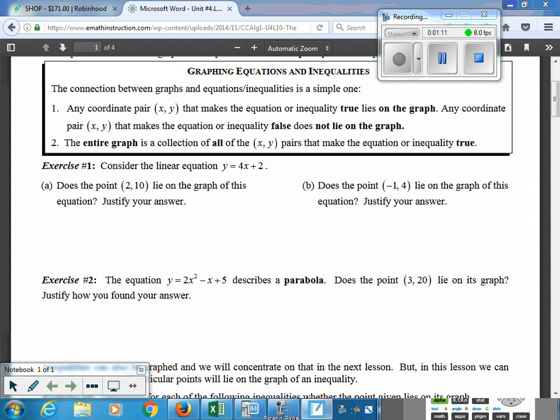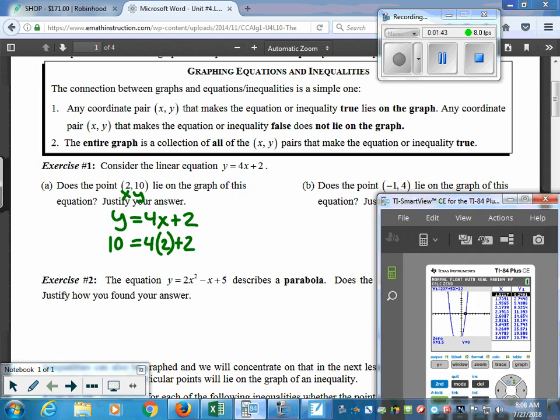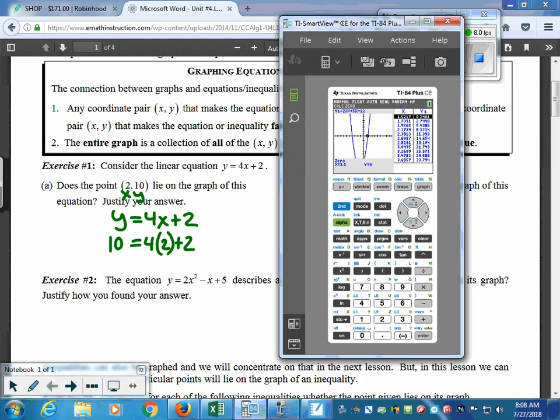They just give us a basic linear equation, y equals 4x plus 2, and it says, does the point (2, 10) lie on the graph? And they want us to justify it. So, what we're going to do is we're going to take the x and the y values, 2 and 10, and we're going to write our equation down. And what we're going to do is we're going to show our work by substituting those numbers in. So, we end up getting 10 equals 4(2) plus 2. And then you take the calculator out. You may not need the calculator for this.